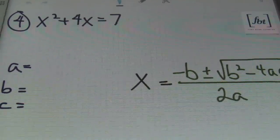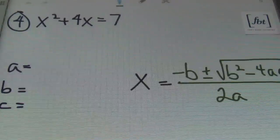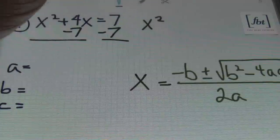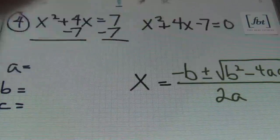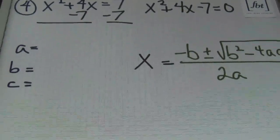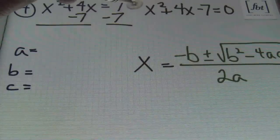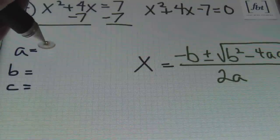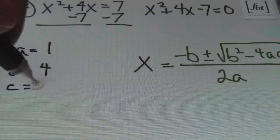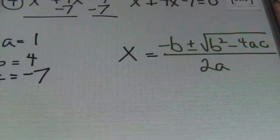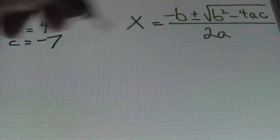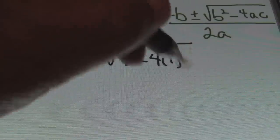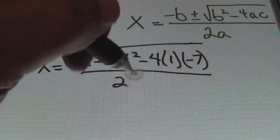Problem number four: x squared plus 4x equals 7. The equation is not set equal to zero, so we subtract 7 from both sides to get x squared plus 4x minus 7 equals zero. Identifying coefficients: since we just have x squared, the coefficient is 1, so a equals 1, b equals 4, c equals negative 7. Plugging into the formula: x equals negative 4 plus or minus the square root of 4 squared minus 4 times 1 times negative 7, all over 2 times 1.